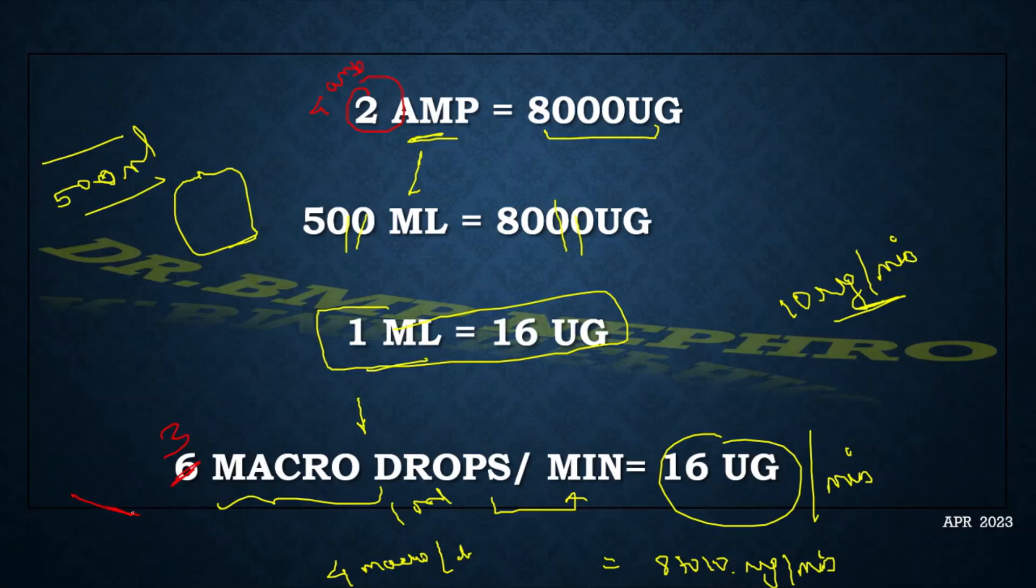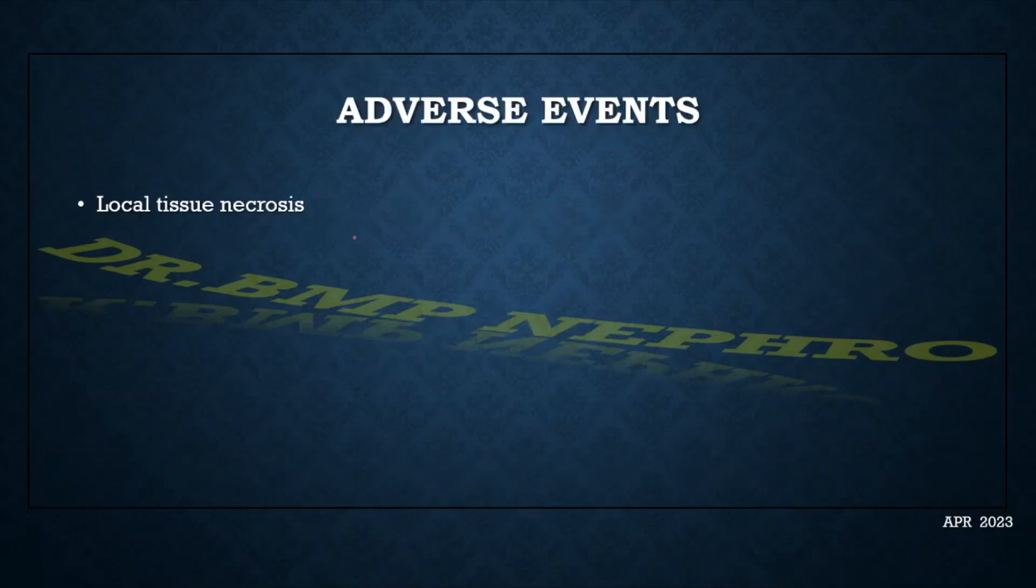So this is how noradrenaline drip infusion sets are being prepared. One important adverse event is, since it is a potential vasoconstrictor, better to give this noradrenaline in big central veins or a good caliber peripheral veins. If we use a very small vein that might cause local tissue necrosis after the extravasation of the drug into the subcutaneous space.